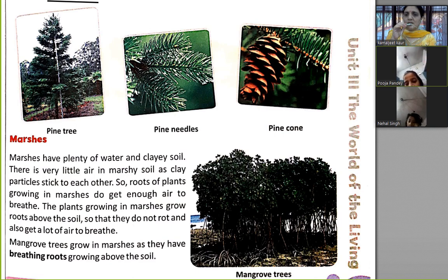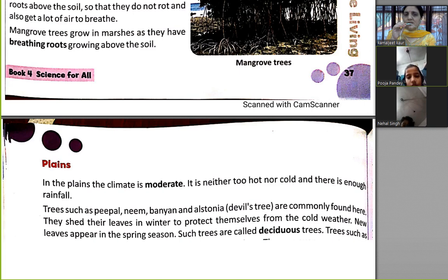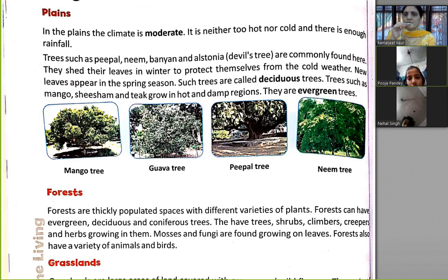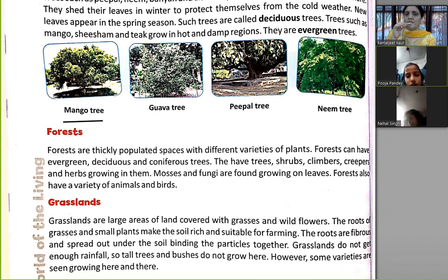Marshes — clay soil is found in marshy areas. Plains have a moderate climate, so many trees grow here: evergreen trees, mango trees, guava tree, peepal tree, and neem tree.